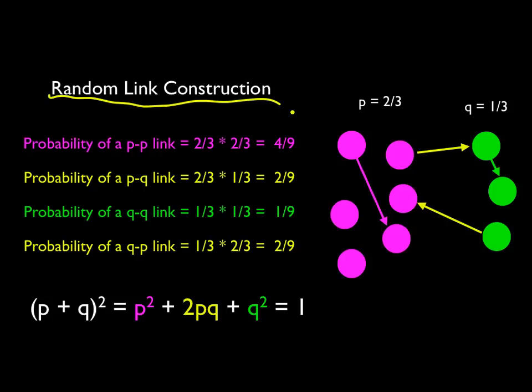Random link construction is you take all the links away. If you recall, there's 18 links total. We're just going to throw a dart at one of these nodes. We still maintain the colors. We're going to throw a dart at one node, then we're going to throw a dart at another node, and then we're going to form a link.